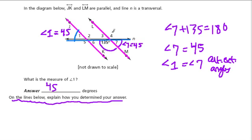So angle 4 equals 135, because it's a vertical angle with 135 degrees. Angle 3 and 7 are vertical angles, so they've got to be equal.